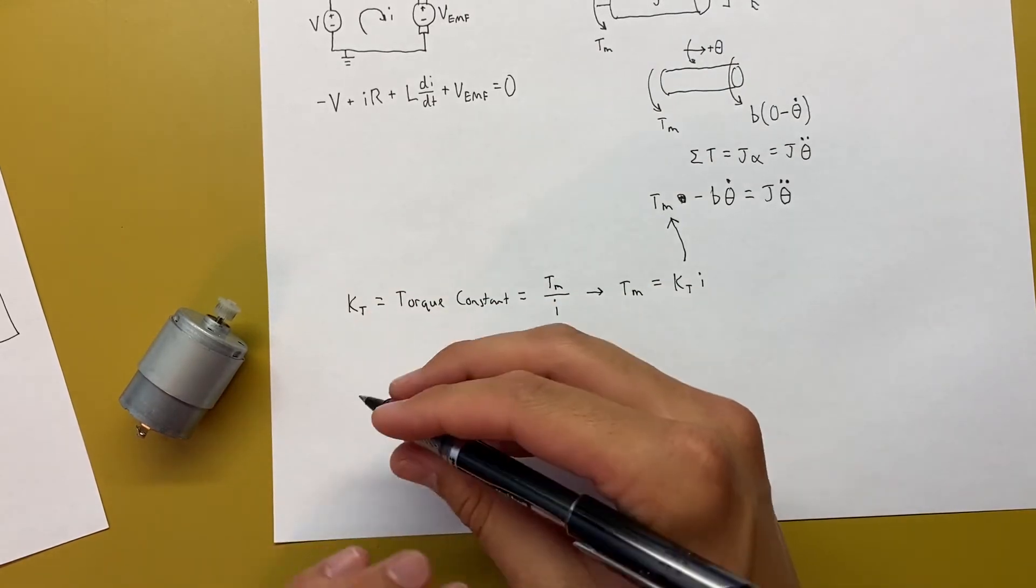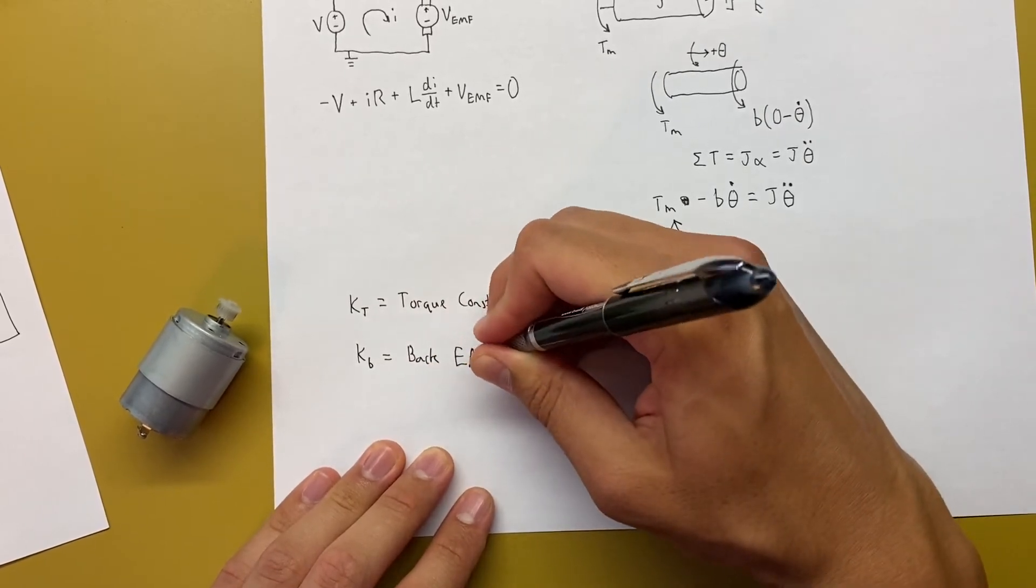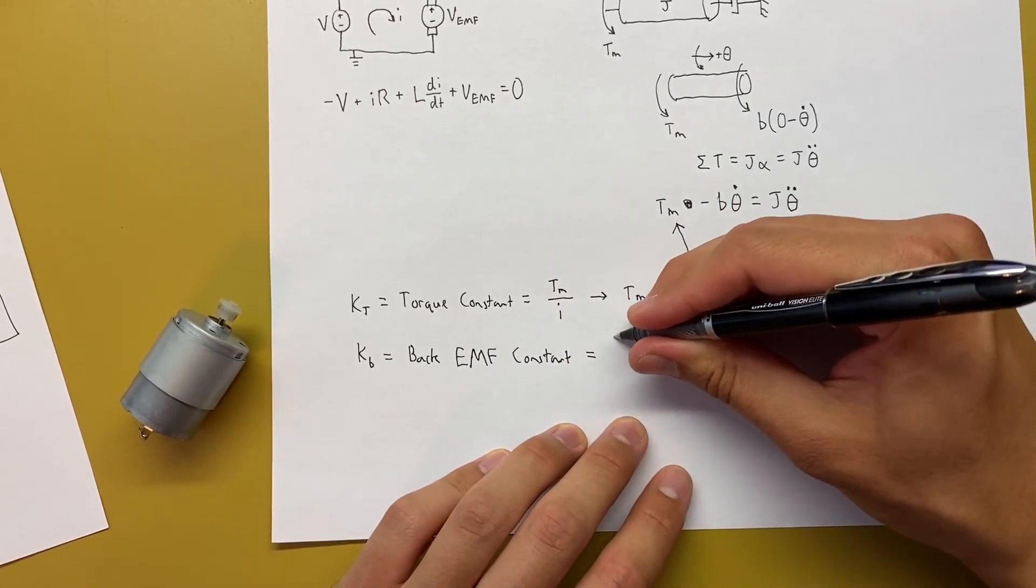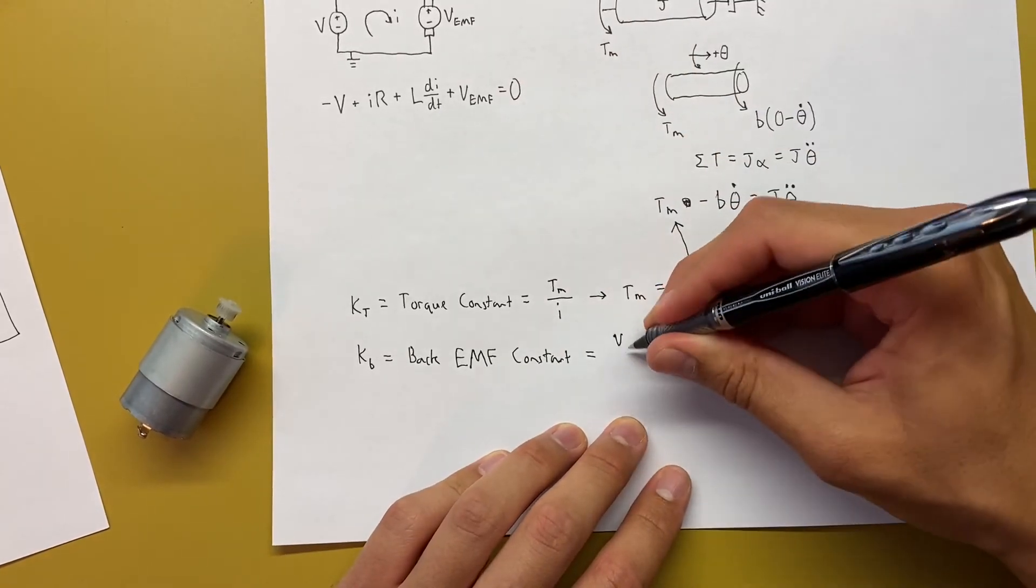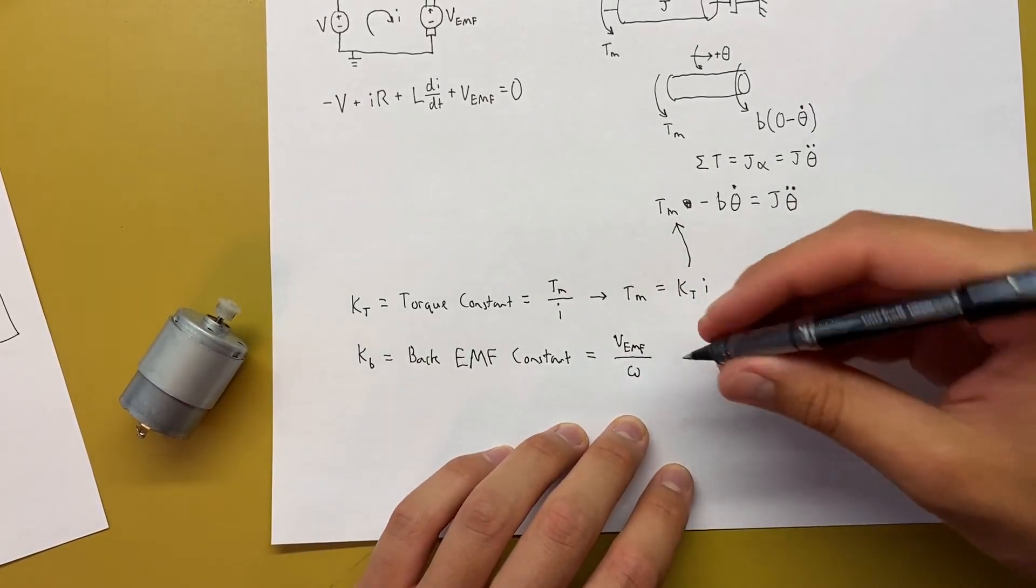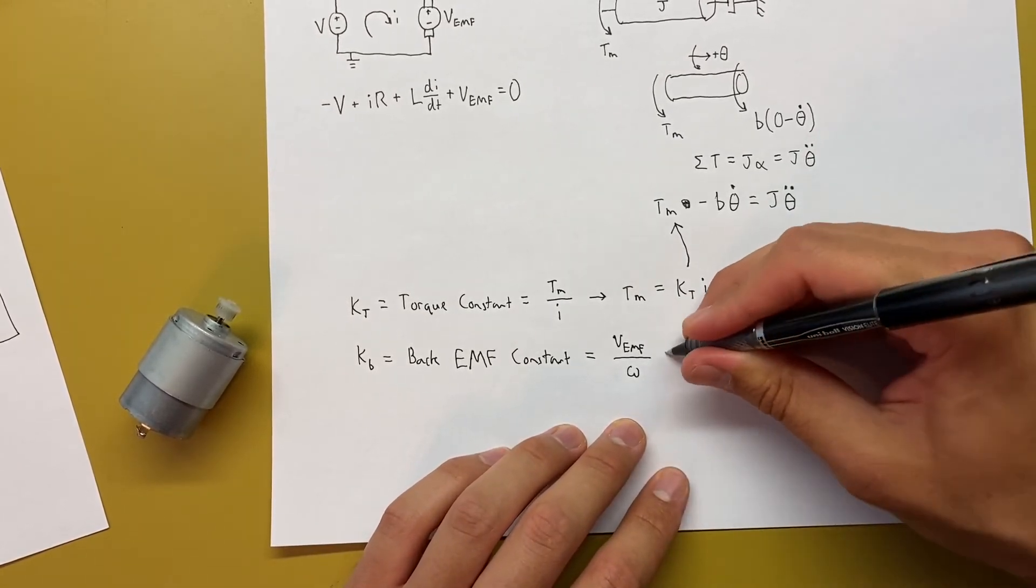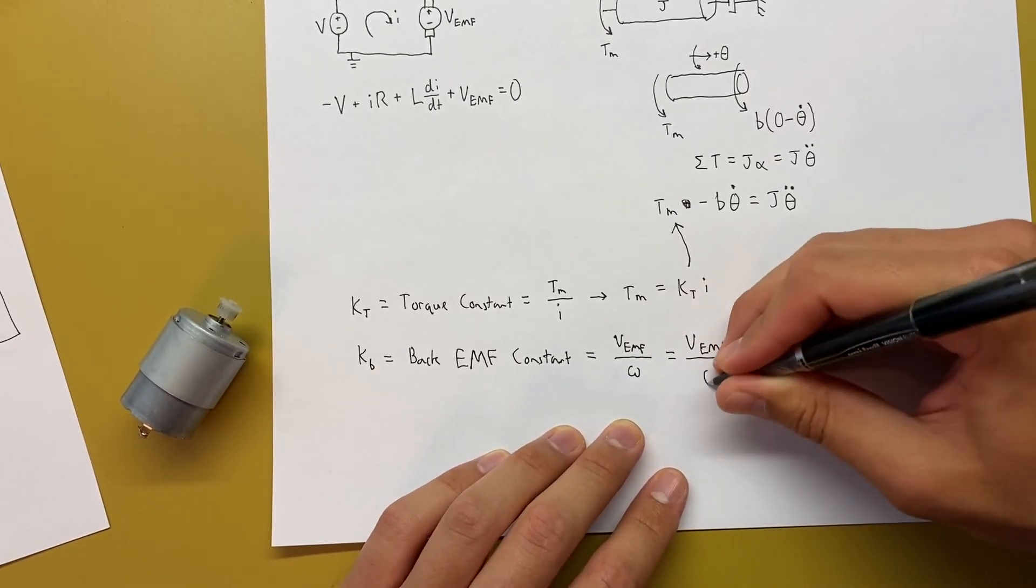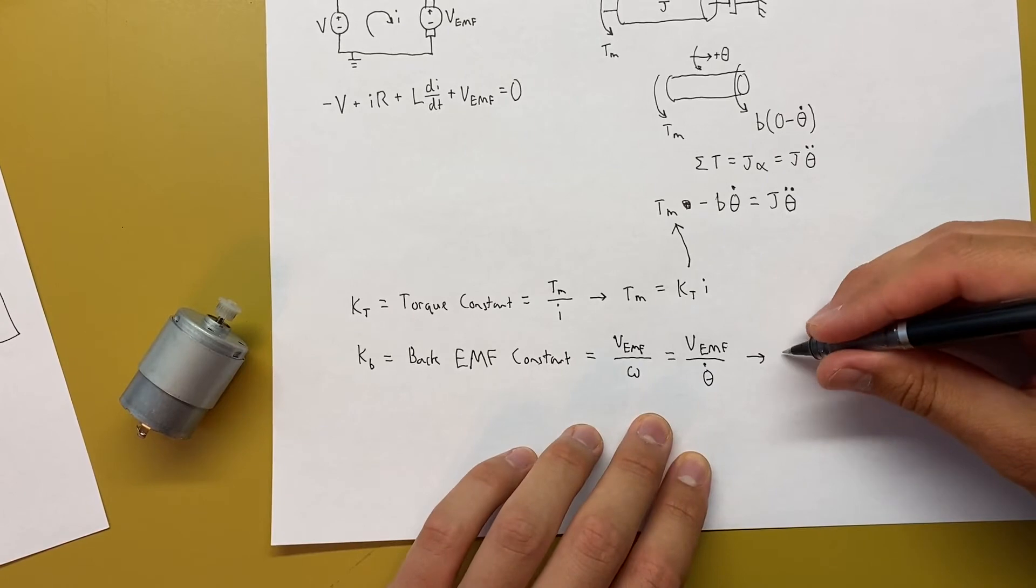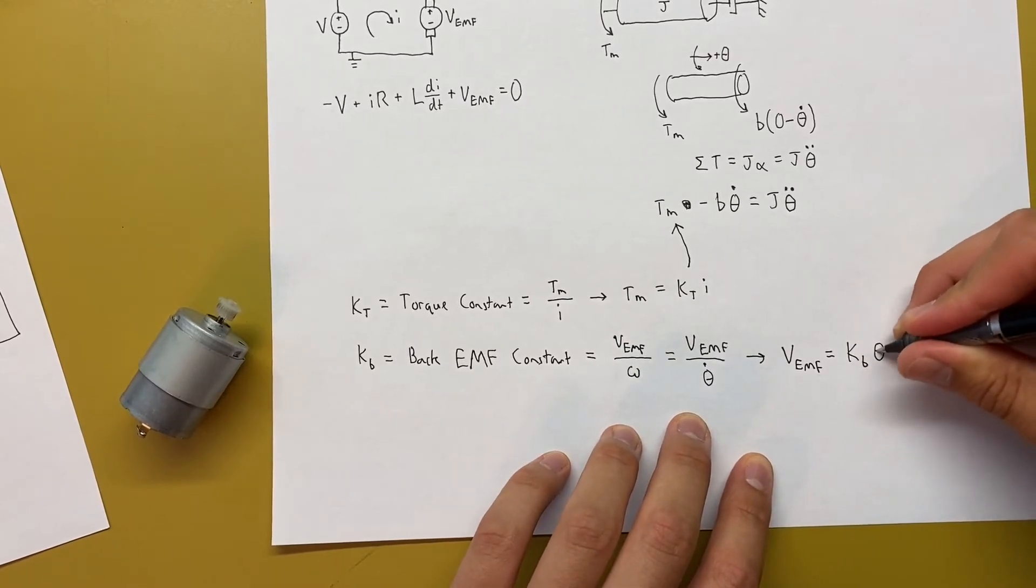And then another constant that we can know about our motor is called KB, or the back EMF constant. And that's equal to the induced voltage over here, VEMF, over omega, the angular velocity of the motor. And since, once again, we're using theta and theta dot, we can replace omega with theta dot. Just to keep everything the same. And that's going to tell us that the induced voltage, VEMF, is equal to KB times theta dot.